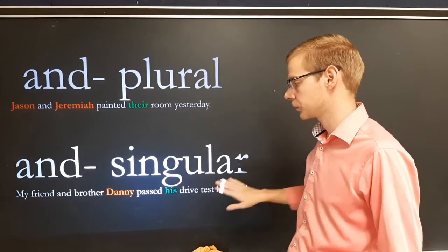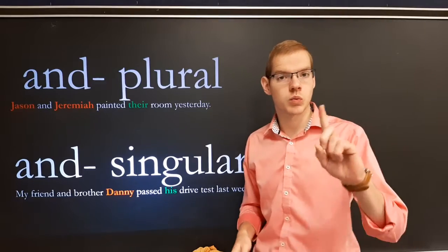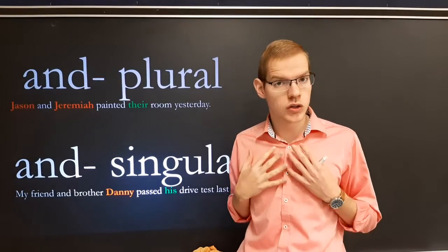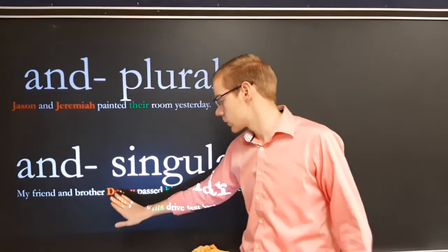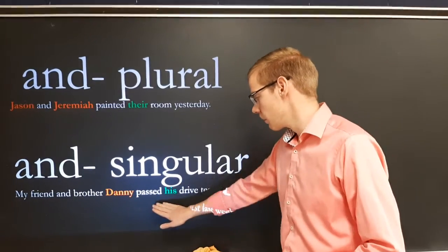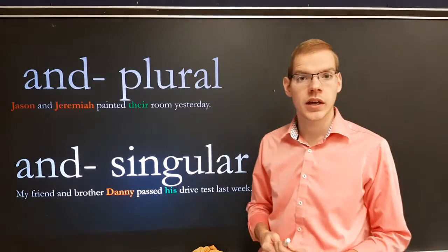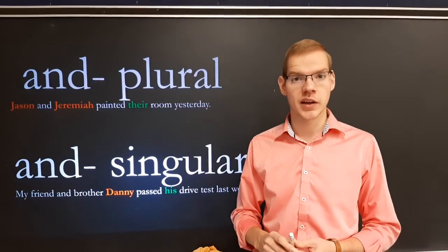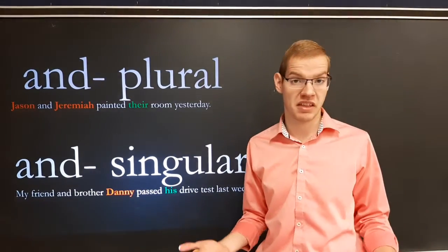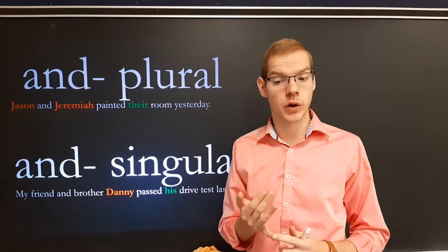Now, when do we use the singular one? 'My friend and brother Danny' — this is just one person. He is my friend; also, he is my brother. So it's one person. 'My friend and brother Danny passed his drive test last week.' It would not be right to say 'passed their,' because it is just one person. Therefore, we have a singular pronoun.